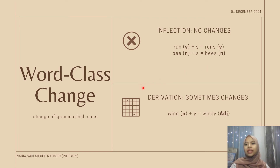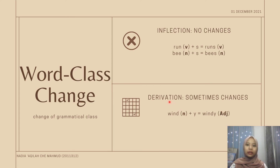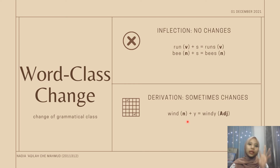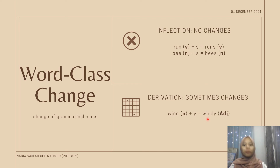Oppositely, there are sometimes changes of the grammatical class for canonical derivational morphemes. For instance, the word 'wind,' which is a noun — when added with a derivational morpheme '-y,' it becomes an adjective: 'windy.'